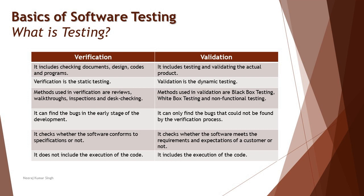Here are some key differences to build your confidence. Verification includes checking documentation, design, codes, and programs statically — without running or executing them. Validation includes testing and validating the actual product, not just work products, but the real product being released to market. Verification is also known as static testing, whereas validation corresponds to dynamic testing. Methods used in verification are reviews, walkthroughs, and inspections; methods used in validation are white box, black box, functional, non-functional testing, and more.